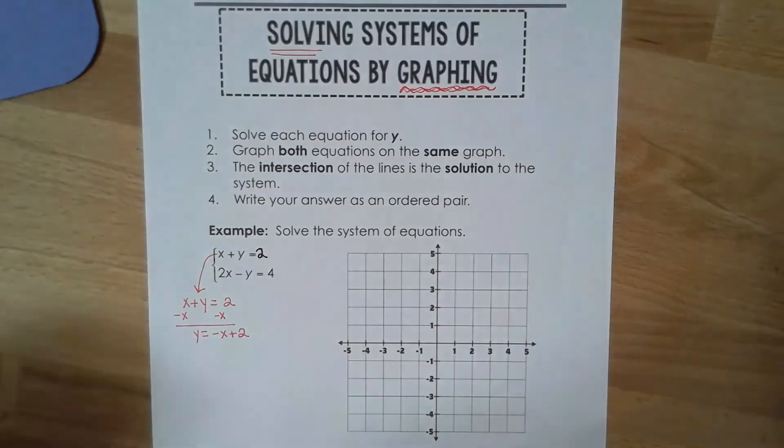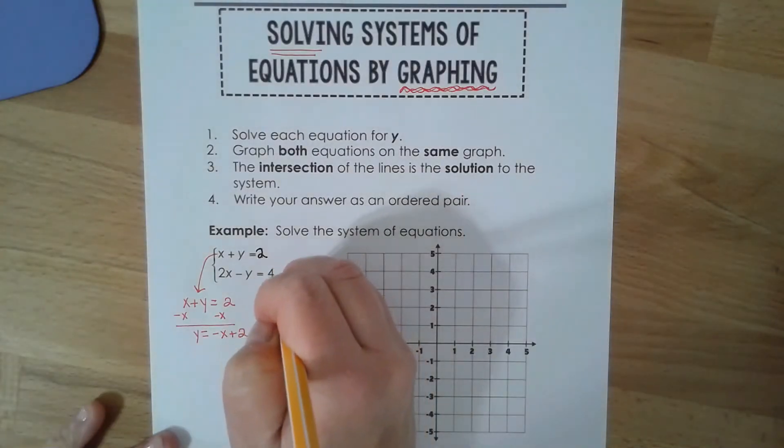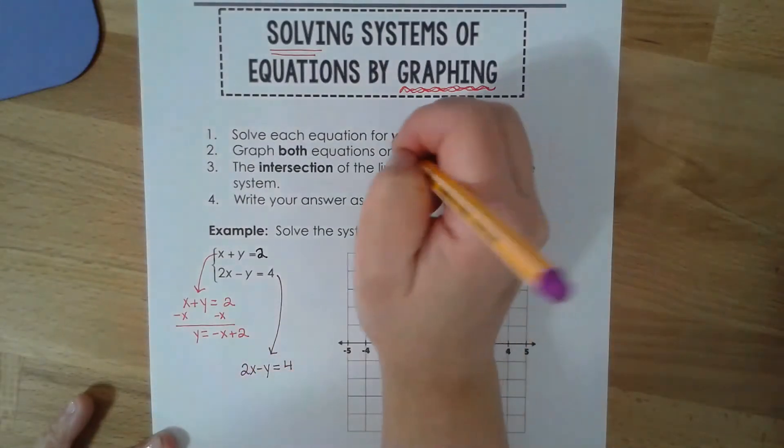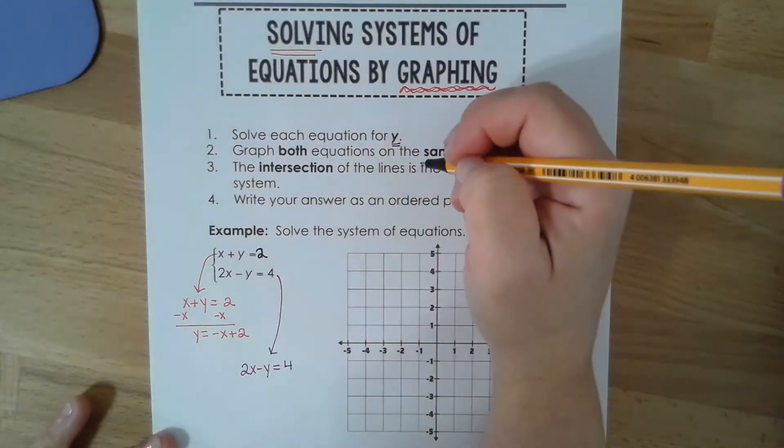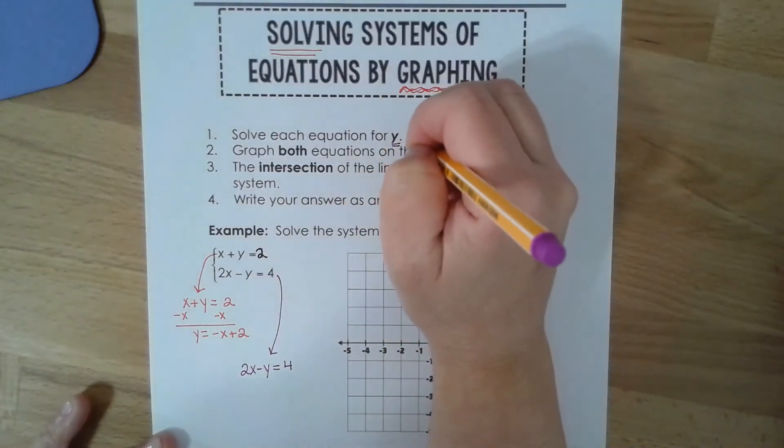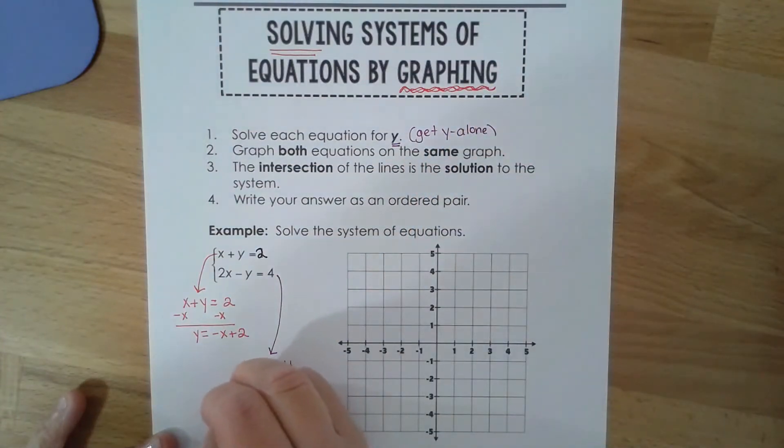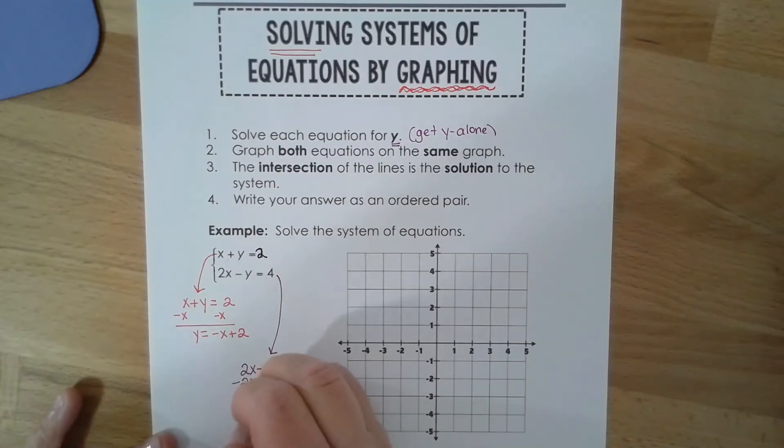Now I'm going to solve my second equation. You don't have to use two colors, I'm just going to show you the difference. So remember, solve for y means get y alone. So I'm going to move the 2x over. Notice I'm going to bring down the negative y. Right, you can't just get rid of that negative. And then I have to get rid of it by dividing everything by negative 1.